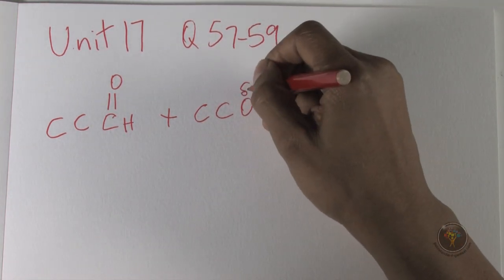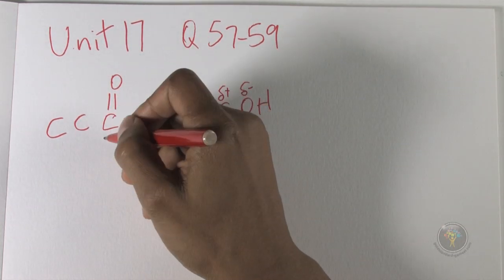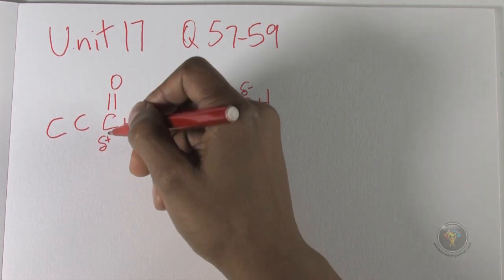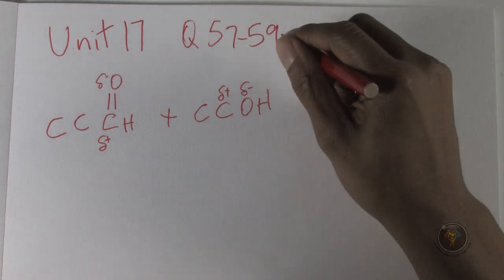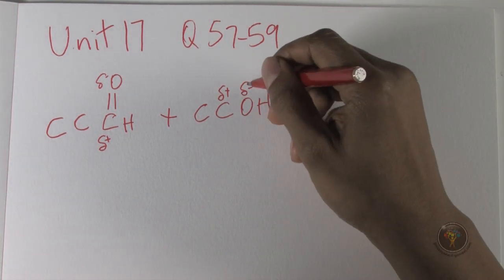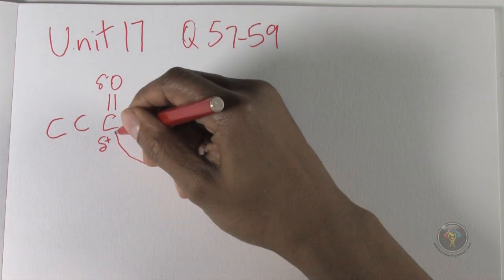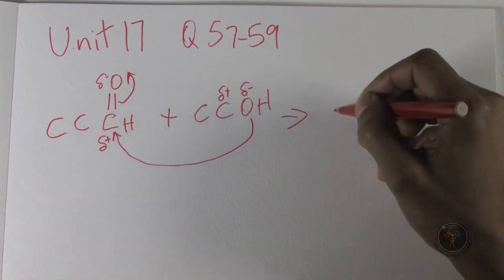And ethanol, so we have CCOH. Oxygen is to the right of carbon in the periodic table, makes it delta negative. Carbon is delta positive. Carbonyl, classic situation: delta positive carbon, delta negative oxygen. Opposites attract, so the oxygen attacks here, knocks the electrons up.